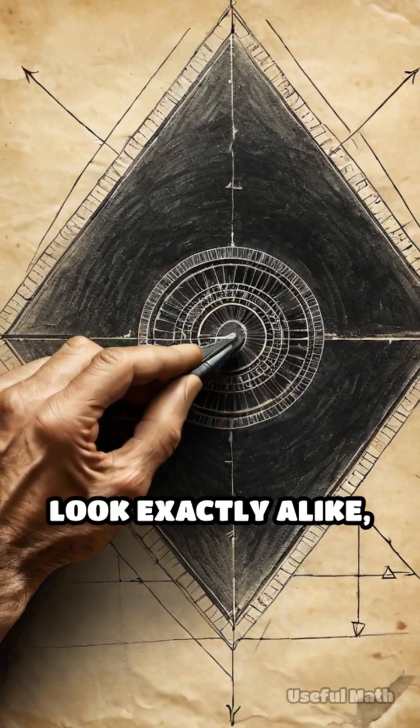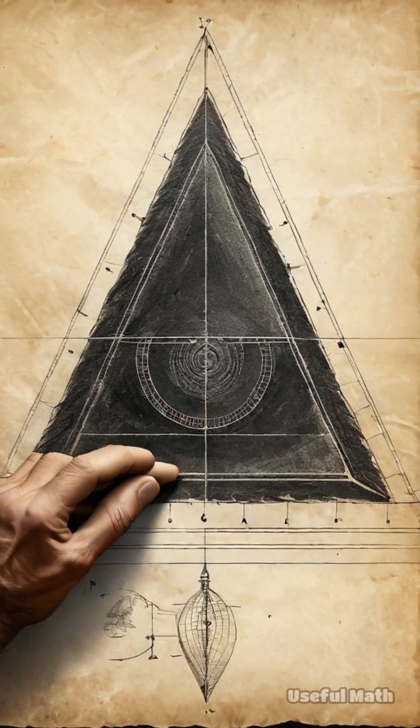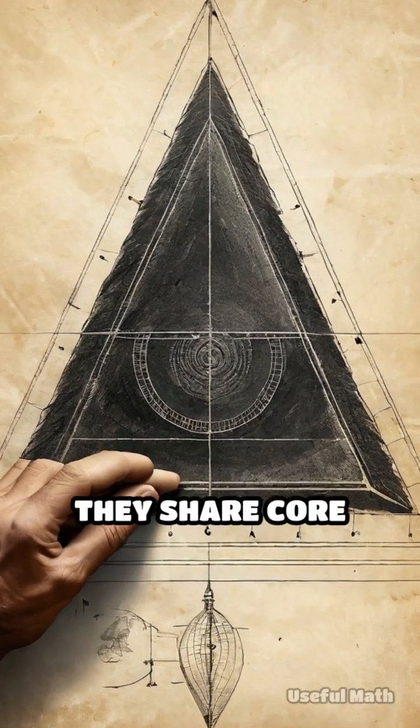Think of triangles. None look exactly alike, but if you can transform one into another through rotation, scaling or reflection, they share core properties.